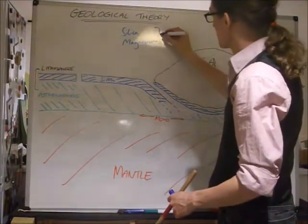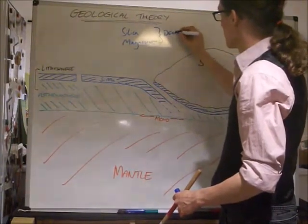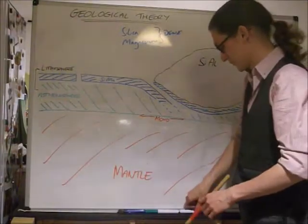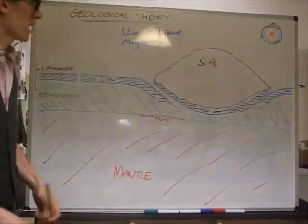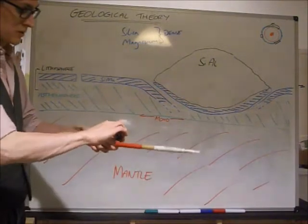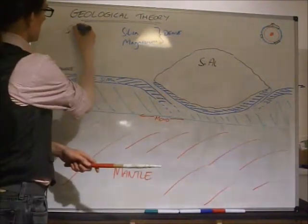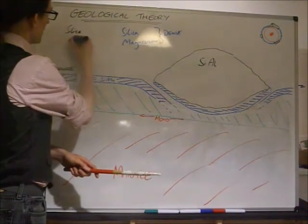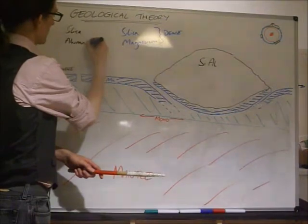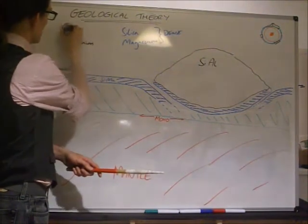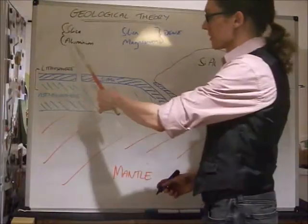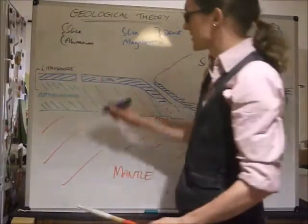So, these are more dense. Comparatively, we have Saial. This is silica and alumina. And Saial is less dense.